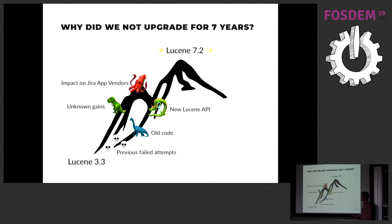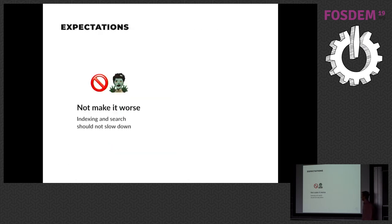When we upgrade Lucene, plugin vendors have to upgrade their plugins as well. There is a big ecosystem of plugins on the Atlassian Marketplace, plus people writing their own internal plugins — all of those using Lucene in a more advanced way had to upgrade. This meant we could only ship the Lucene upgrade in a major version — JIRA 8.0, which was coming out in a few days.